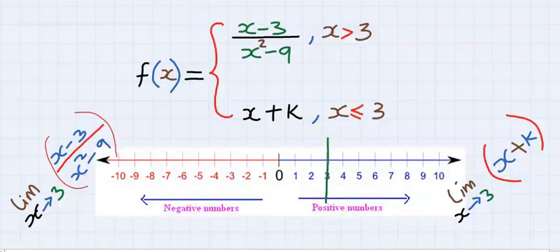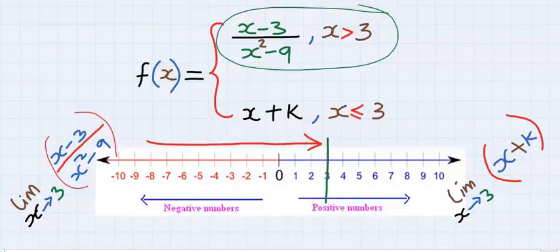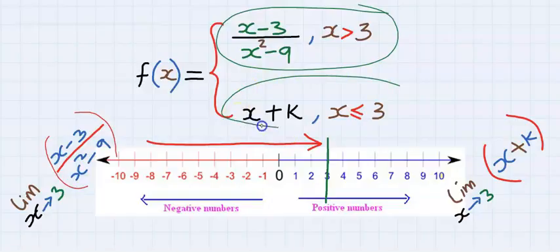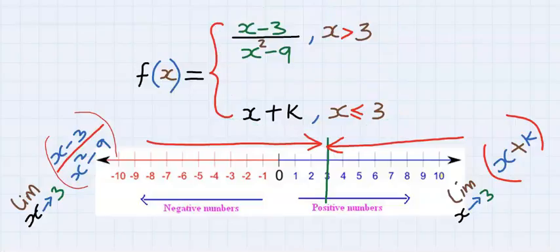Next, you can observe that the left hand limit can approach 3 but will not be equal to 3. Next, you can observe that the right hand limit can approach 3 and can be equal to 3.